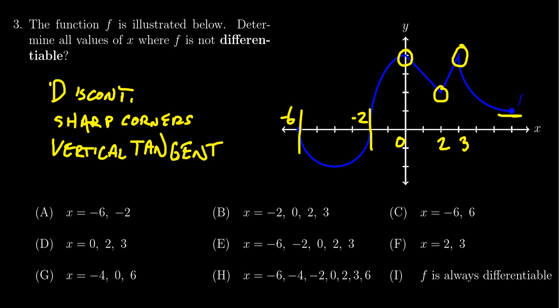When it comes to the boundary, there's actually no problem at x equals six right here. There's a horizontal tangent—not a big deal. Horizontal tangent lines are perfectly fine. The vertical tangents we need to throw out, sharp corners we need to throw out, and also any discontinuities.